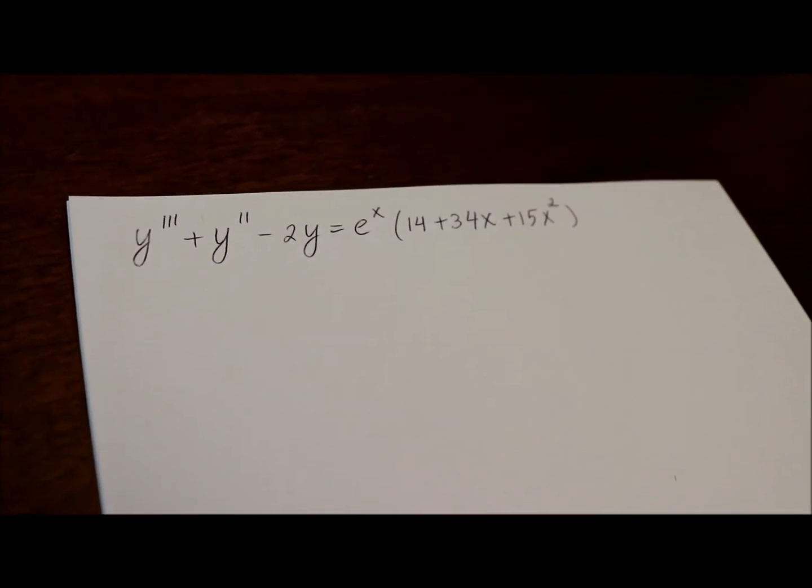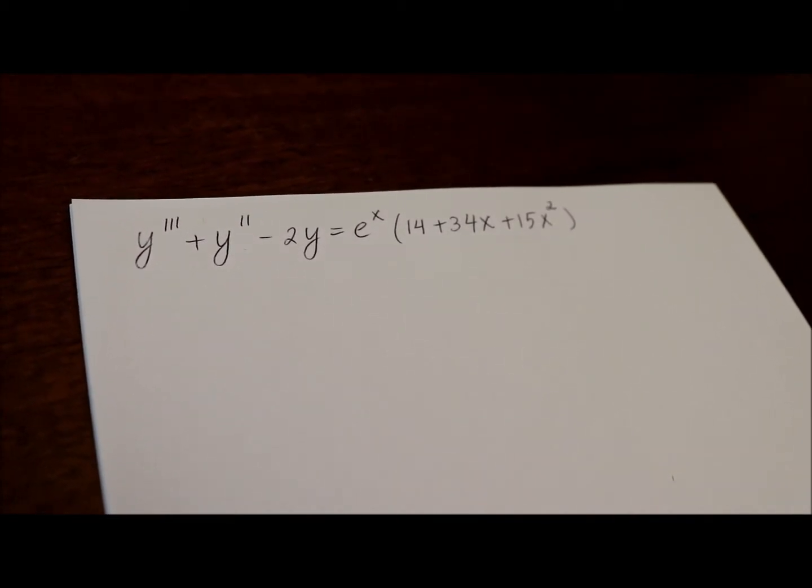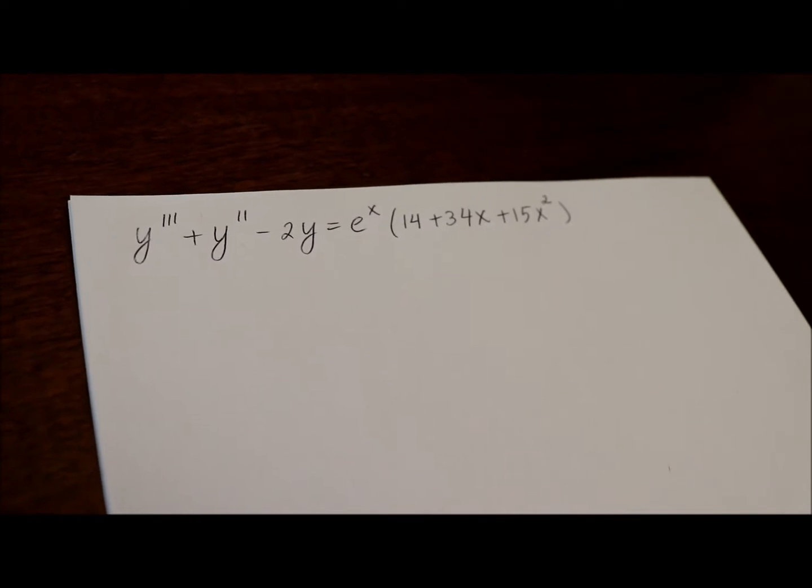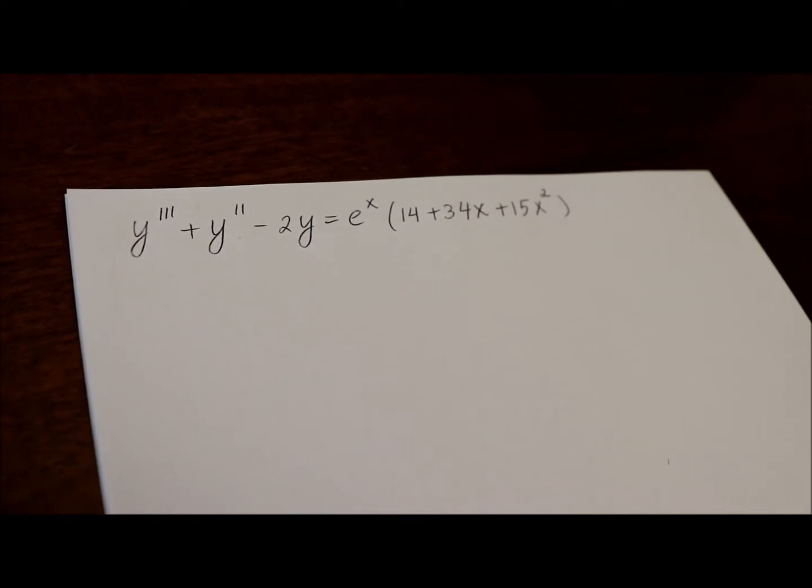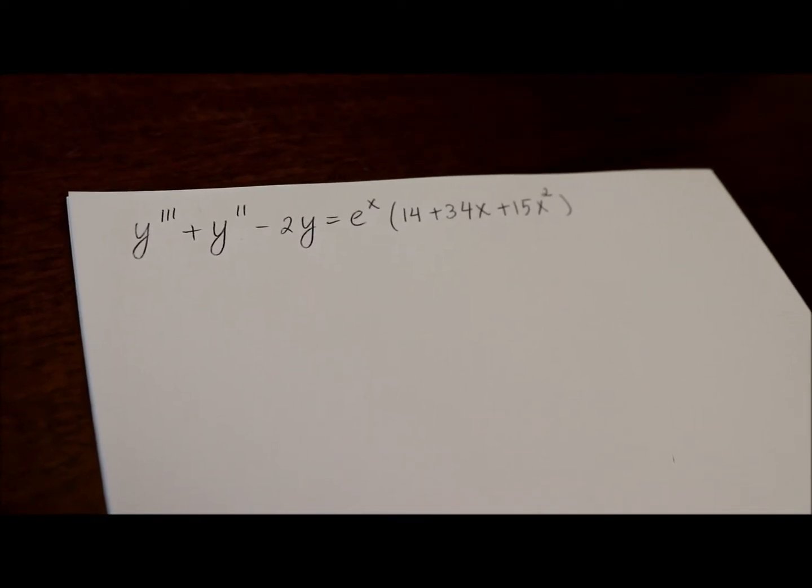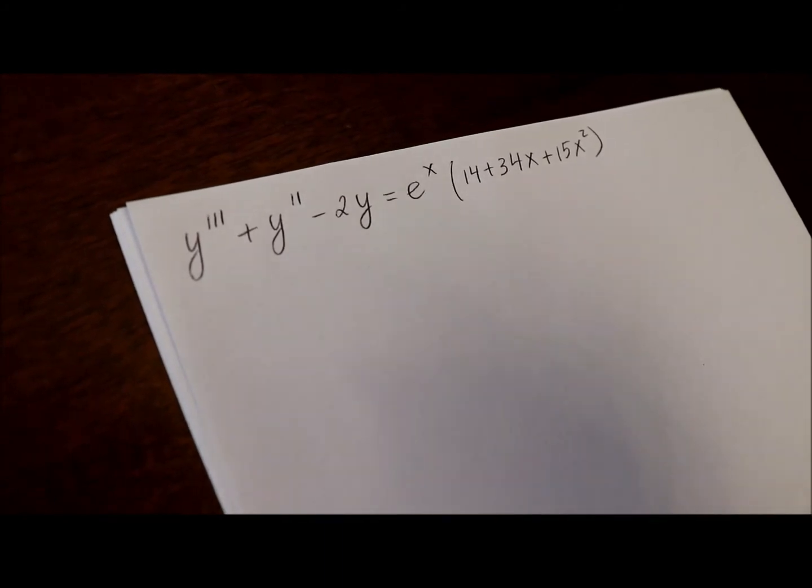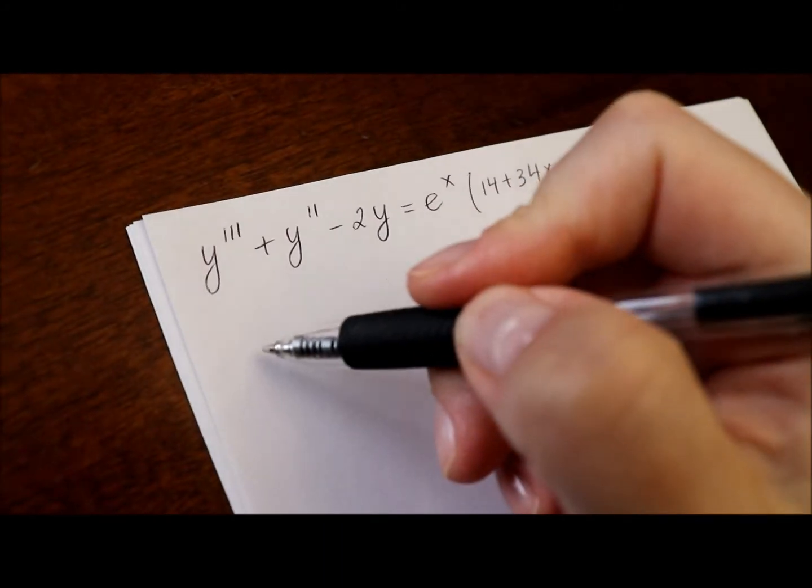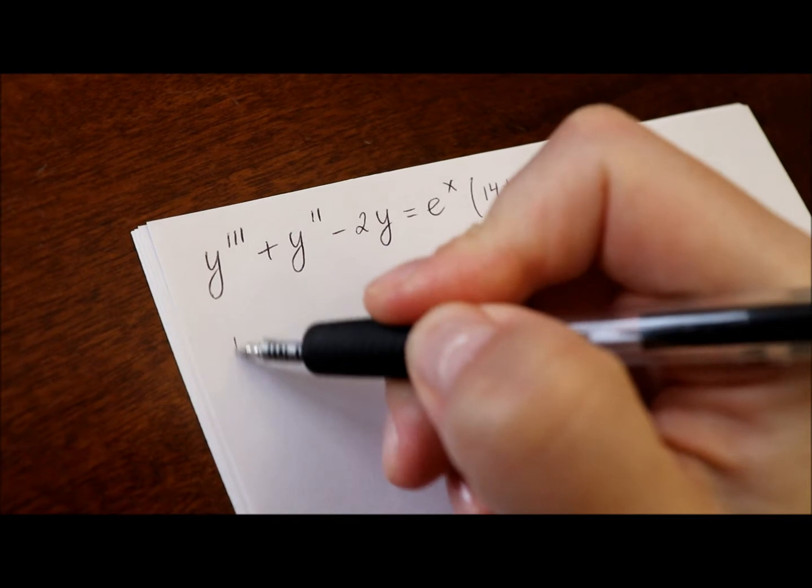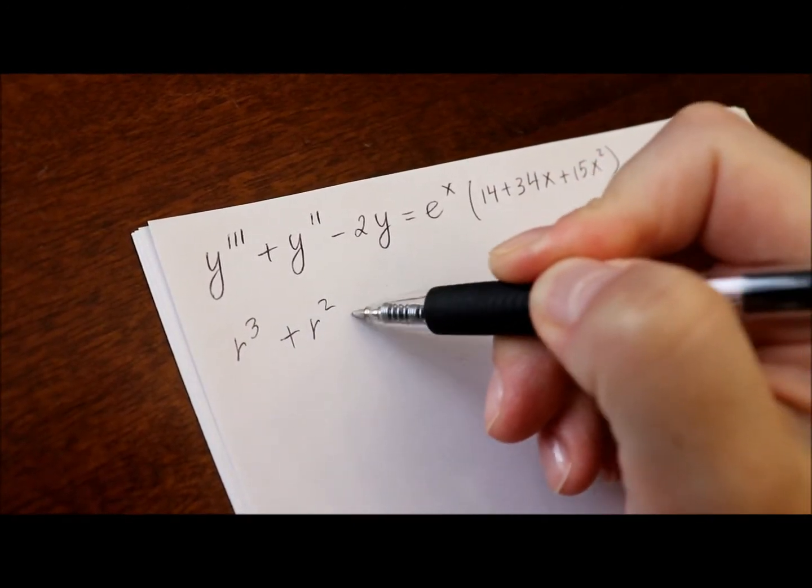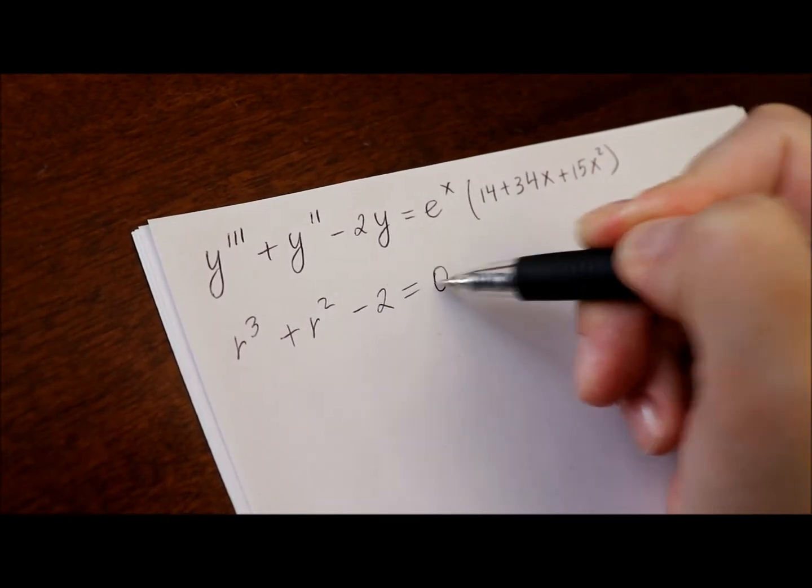Hi everyone, today we are going to solve a third order non-homogeneous linear equation with constant coefficients. Let's start by writing the characteristic equation. It will be r cubed plus r squared minus 2 equals 0.